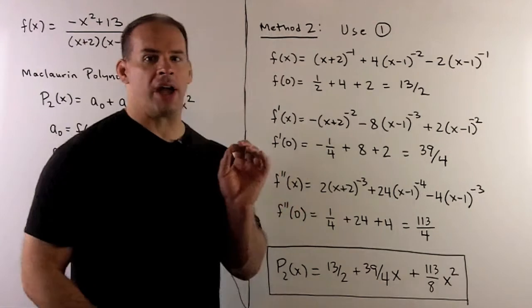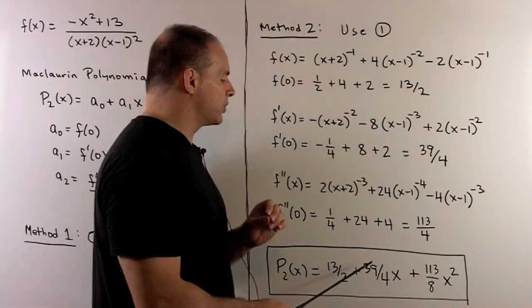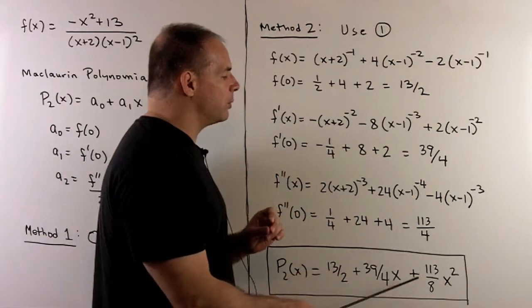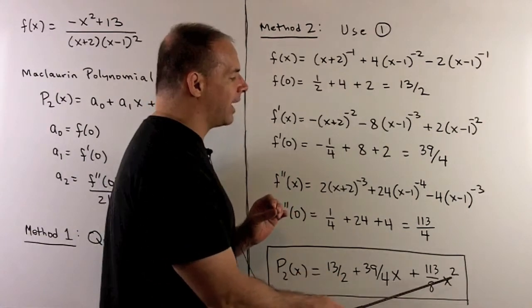So following our recipe, we'll have 13/2 + 39/4 x. Then here we're going to have to divide by 2, so I'll have 113/8 x².